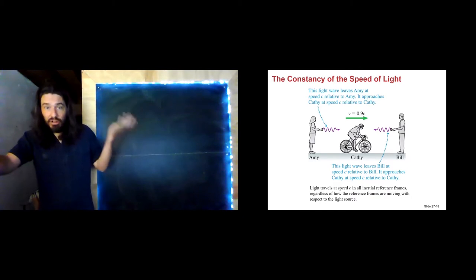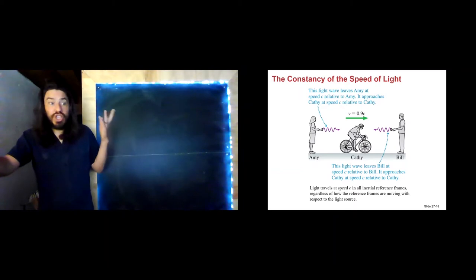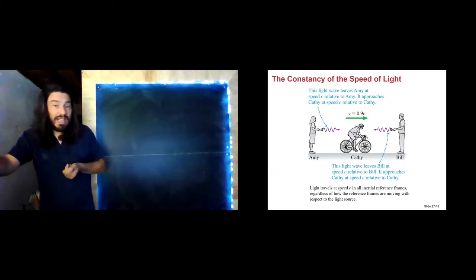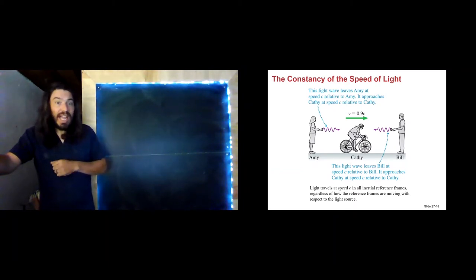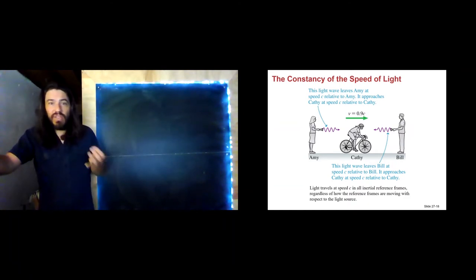Kathy, as well as riding her bike incredibly fast, also has a speed-of-light-o-meter, which she can use to measure the speed at which light waves are approaching her. All three of these people measure the exact same value for the speed of light.